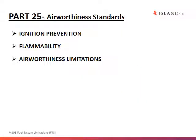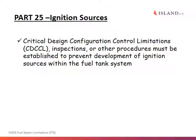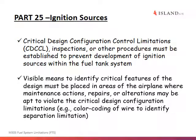Part 25 addresses three issues: ignition prevention, flammability, and airworthiness limitations. Looking more closely at ignition sources, aircraft need to be created and inspected so as to prevent the development of ignition sources within the fuel tank. There also needs to be a visible means to identify the critical features of the aircraft that, if compromised, could allow for an ignition event. We need to mitigate these ignition sources.